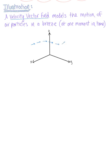Each one of these vectors is representing or modeling the motion of air particles in the breeze. Now these vectors do not have to be of equal length either; it can have some vectors of different length here.